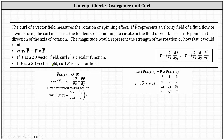The curl of a vector field measures the rotation or spinning effect. We find the curl of a vector field, and if we have a three-dimensional vector field, the result is another vector field, which we can see from the formula shown here at the bottom right. If a vector field F represents a velocity field of a fluid flow or windstorm, the curl measures the tendency of something to rotate in the fluid or wind. If F is a two-dimensional vector field, then the curl of F is often referred to as a scalar function. But in this lesson, we're focusing on a three-dimensional vector field, and the curl of a three-dimensional vector field is another vector field.